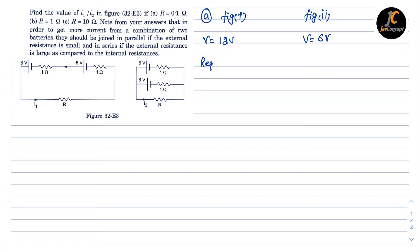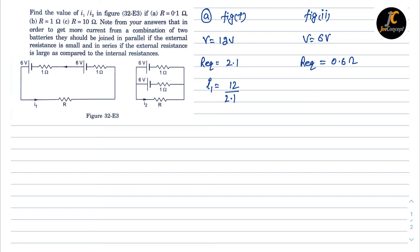For figure 1, R equivalent is 2.1 ohms. For figure 2, the two 1-ohm internal resistances are connected in parallel, and R is acted in series, so R equivalent for figure 2 is 0.5 plus 0.1, which equals 0.6 ohm. For figure 1, i1 is voltage upon resistance, and for i2 it is 6 upon 0.6.